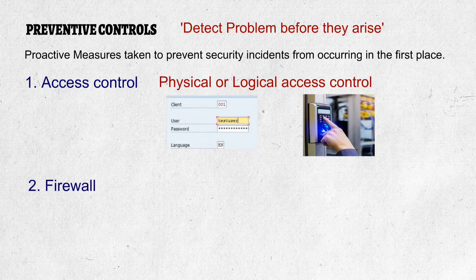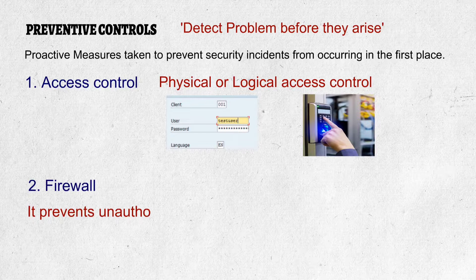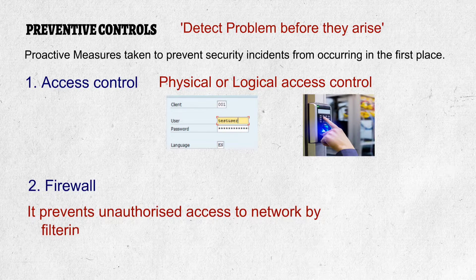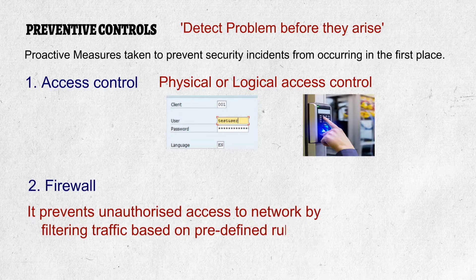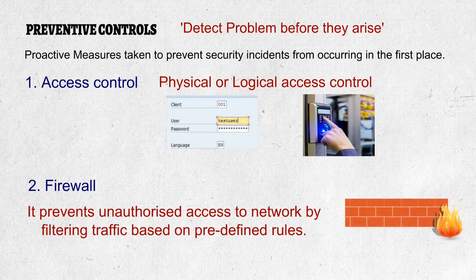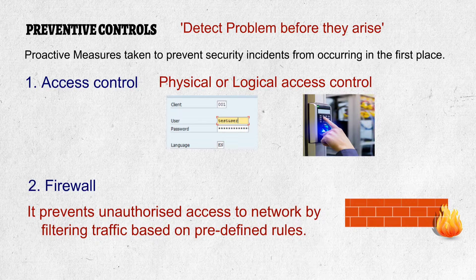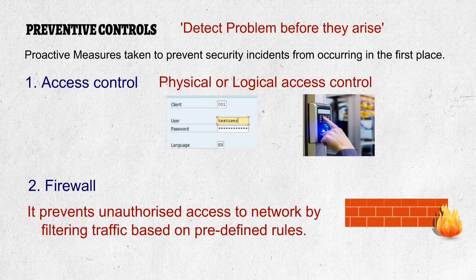The second example is a firewall. A firewall is designed to protect against unauthorized access to a network or system by filtering network traffic based on predefined rules. A firewall can prevent unauthorized access attempts from reaching the network and reduce the risk of a successful attack. So a firewall is also a preventive control.